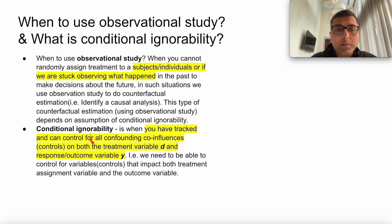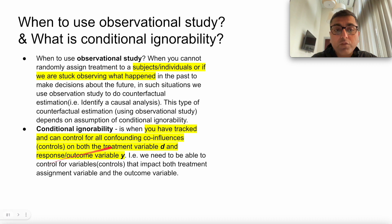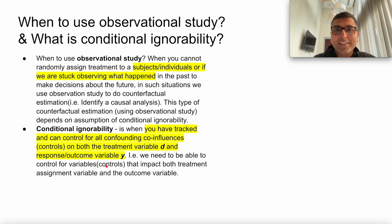Conditional ignorability assumes that you have tracked and can control all confounding variables — all variables that influence your treatment selection, your outcome, and your response. It assumes that you are able to look at your data and control for all such variables. That's the big, very strong assumption — it just assumes you can actually do what an A-B test does.